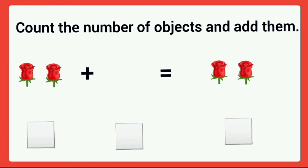Next, how many flowers are in the first set? One, two. Write two in the given box. Plus next group, no flower. So we can write zero. Then total number of flowers are two. That is two plus zero is equal to two.